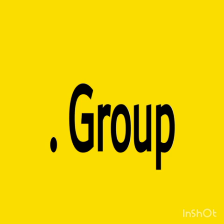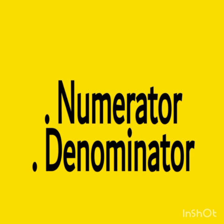The last vocabulary words are Numerator and Denominator. The top number is called Numerator and the bottom number is called Denominator. So the number which is up is the Numerator, and the number which is down is the Denominator. These are the vocabulary words: Whole, Part, Equal Quarter, Group, Numerator, and Denominator.